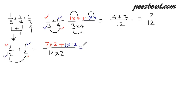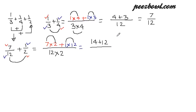Let us see the result. 7 multiplied by 2 is 14, and 1 multiplied by 12 is 12, so the numerator is 14 plus 12, which is 26. For the denominator, 12 multiplied by 2 is 24. So we have 26/24.